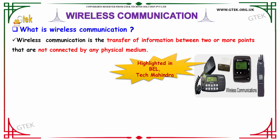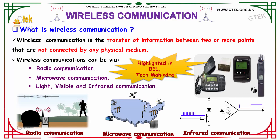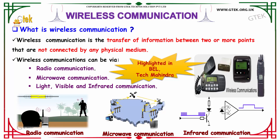These questions are highlighted in Bell and Tech Mahindra. Wireless communication can be via radio communication, microwave communication, light, visible and infrared communication.